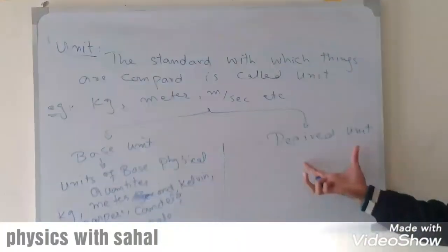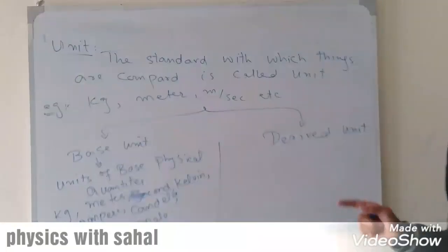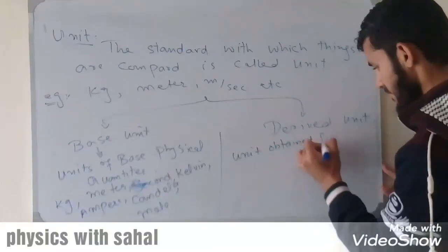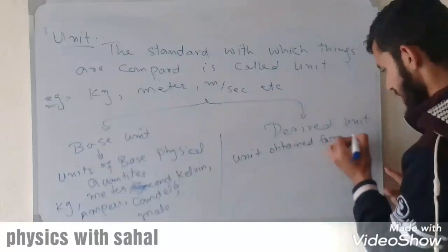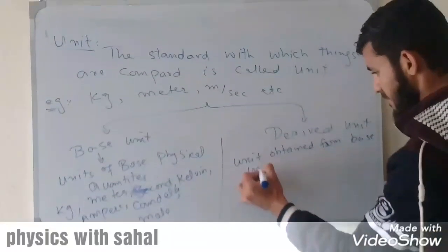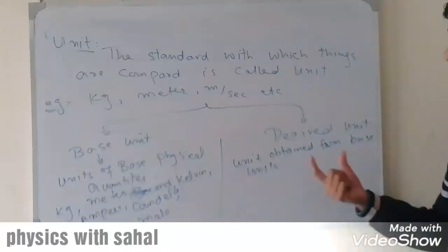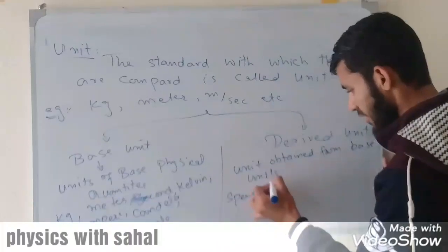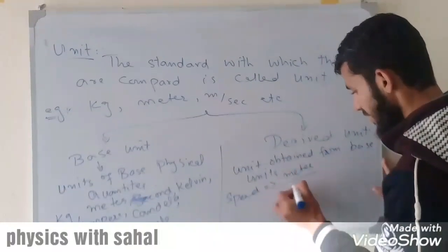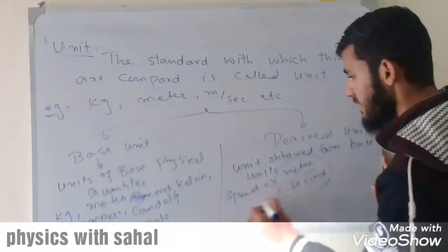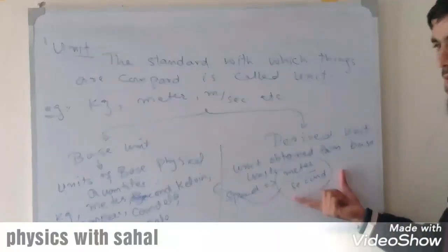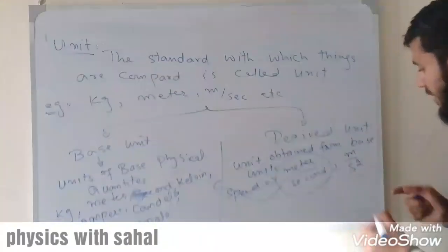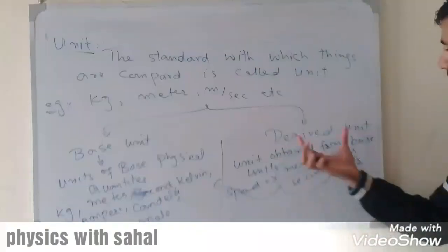Now let's come to derived units. Derived units are the units derived from base units — units obtained from base units. For example, speed: the unit of speed is meter per second. This unit is obtained from base units, so this is called a derived unit.